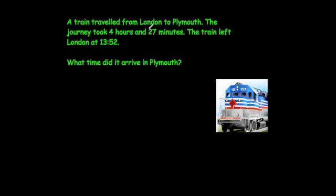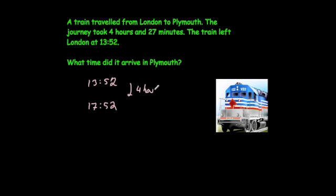A train traveled from London to Plymouth. The journey took 4 hours 27 minutes. The train left London at 1:52 p.m., or 13:52. We start at 13:52 and add on four hours, which brings us to 17:52.